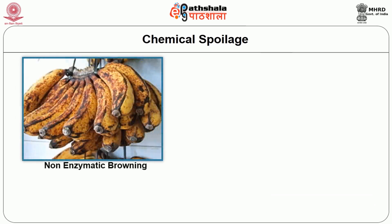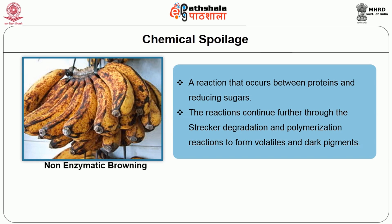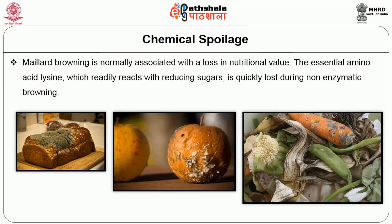Non-enzymatic browning — for example, the Maillard reaction — is a reaction that occurs between proteins and reducing sugars. The reactions continue further through structure degradation and polymerization reactions to form volatiles and dark pigments, causing browning of color and sometimes changes in texture of the food product. In addition, Maillard browning is normally associated with a loss in nutritional value. The essential amino acid lysine, which readily reacts with reducing sugars, is quickly lost during non-enzymatic browning.